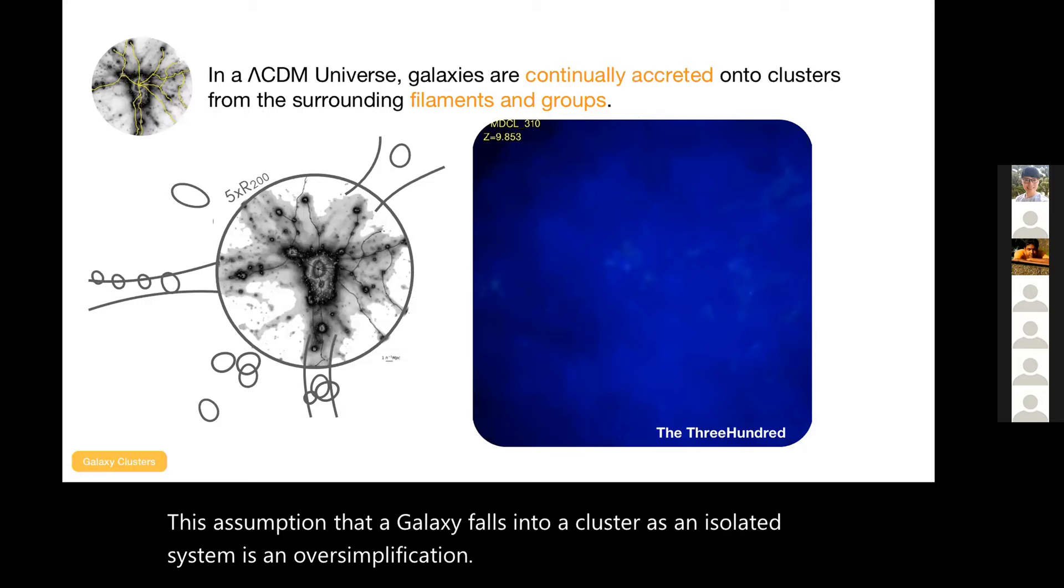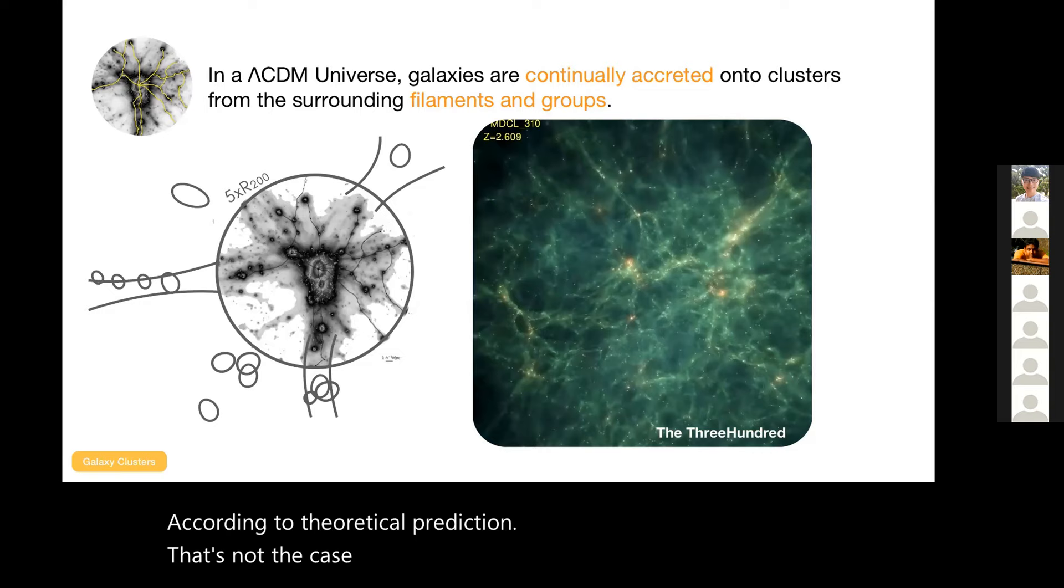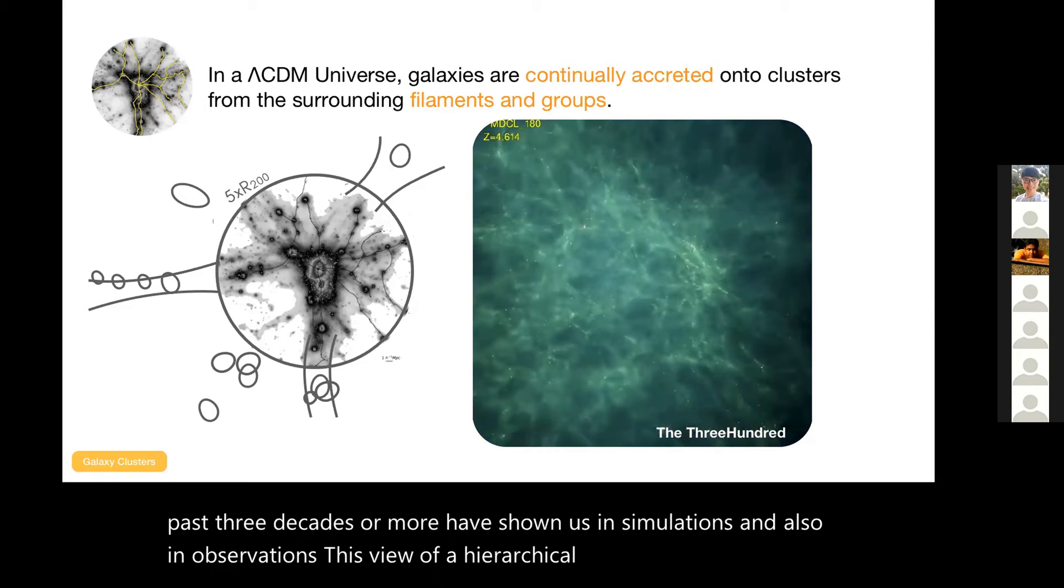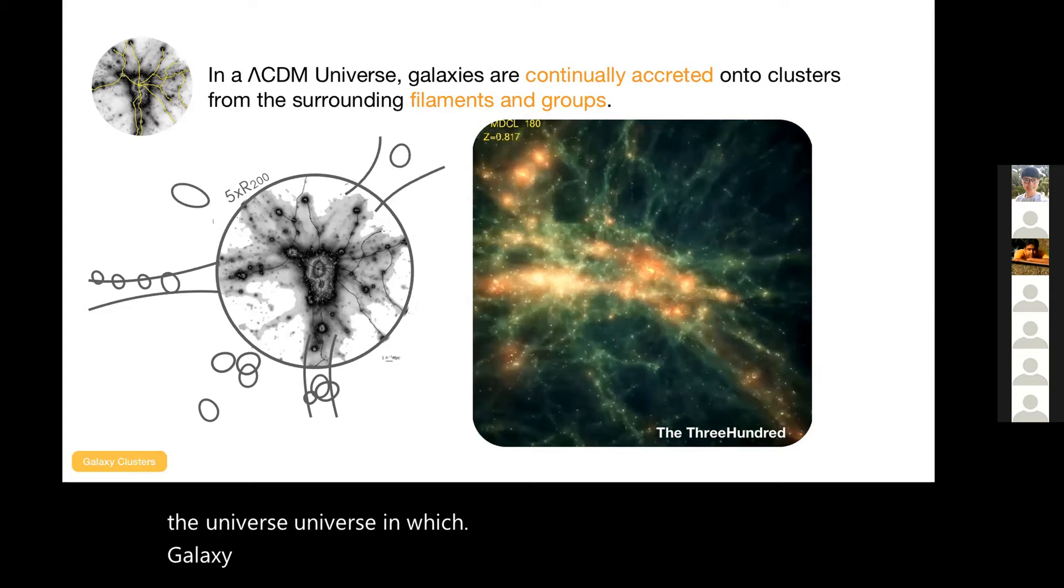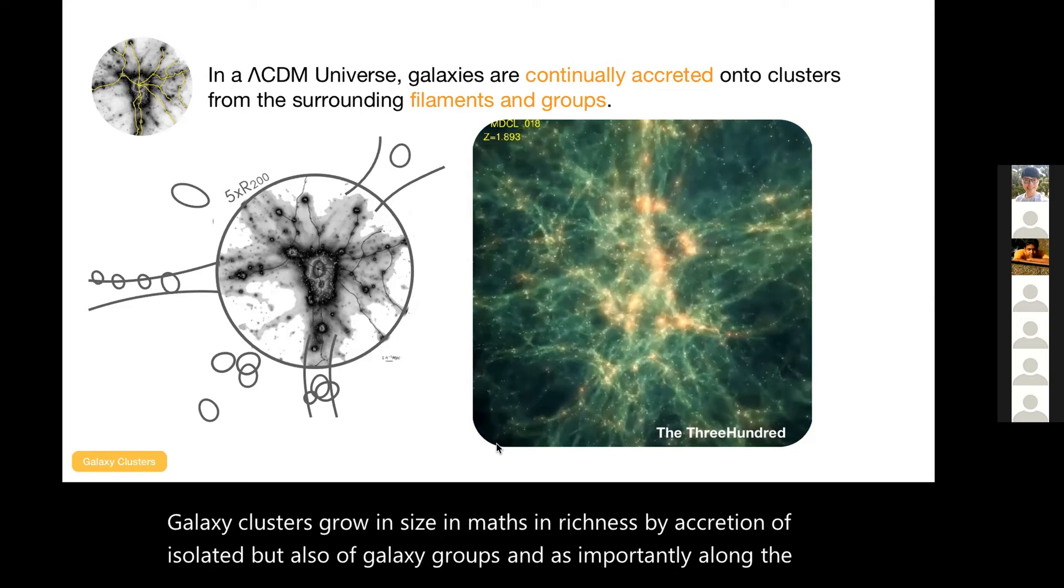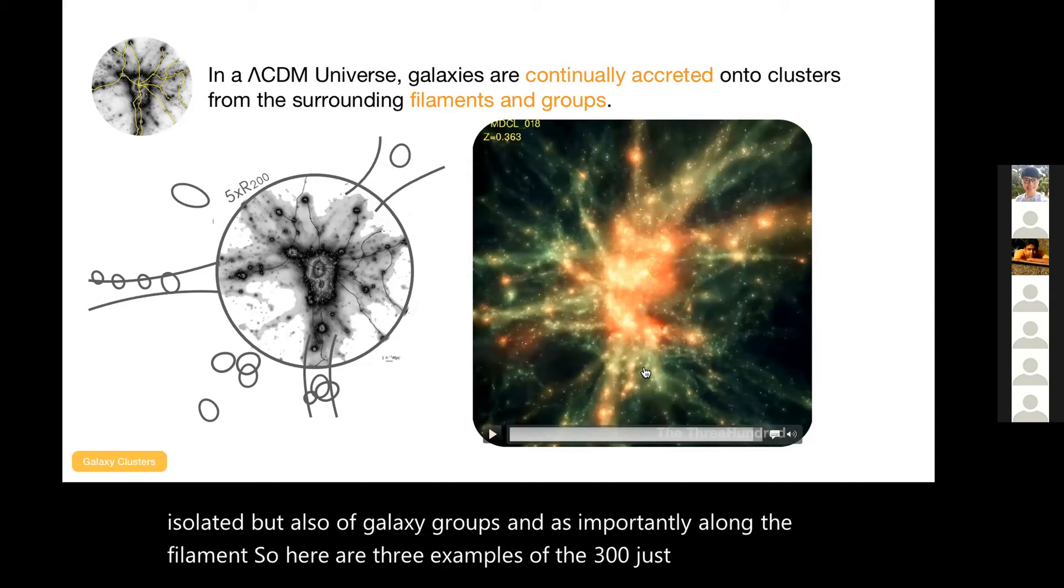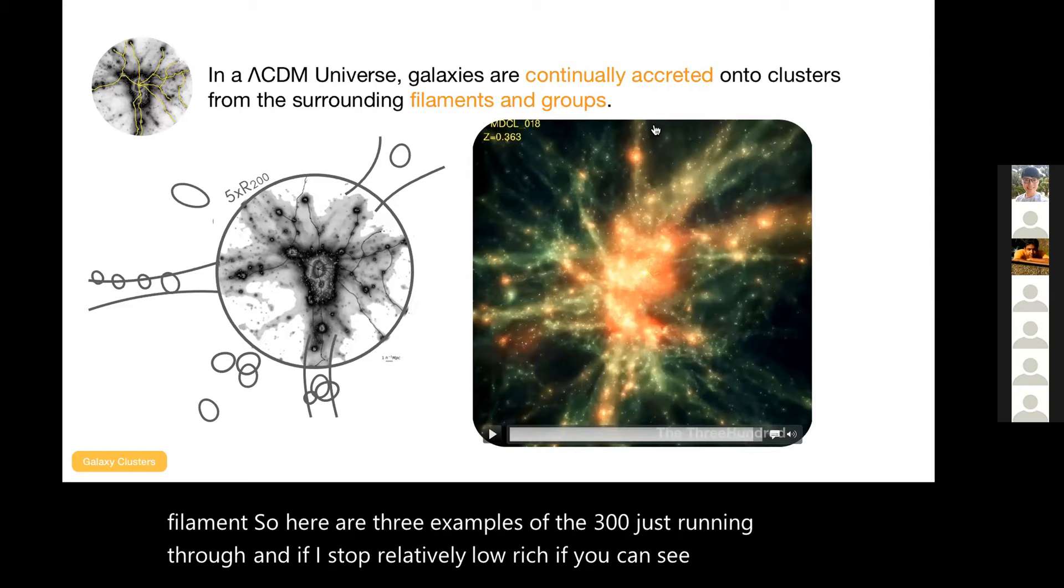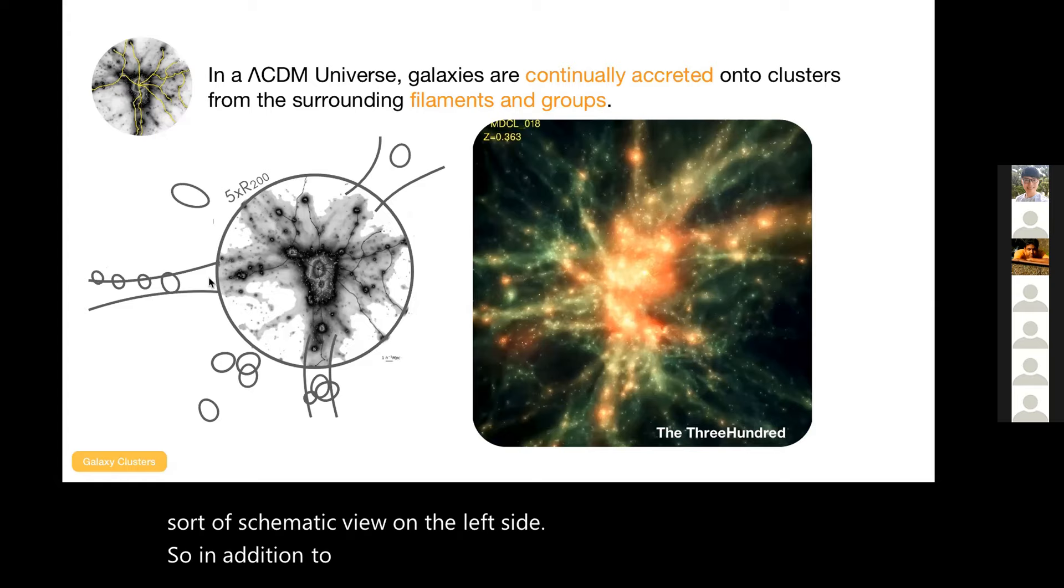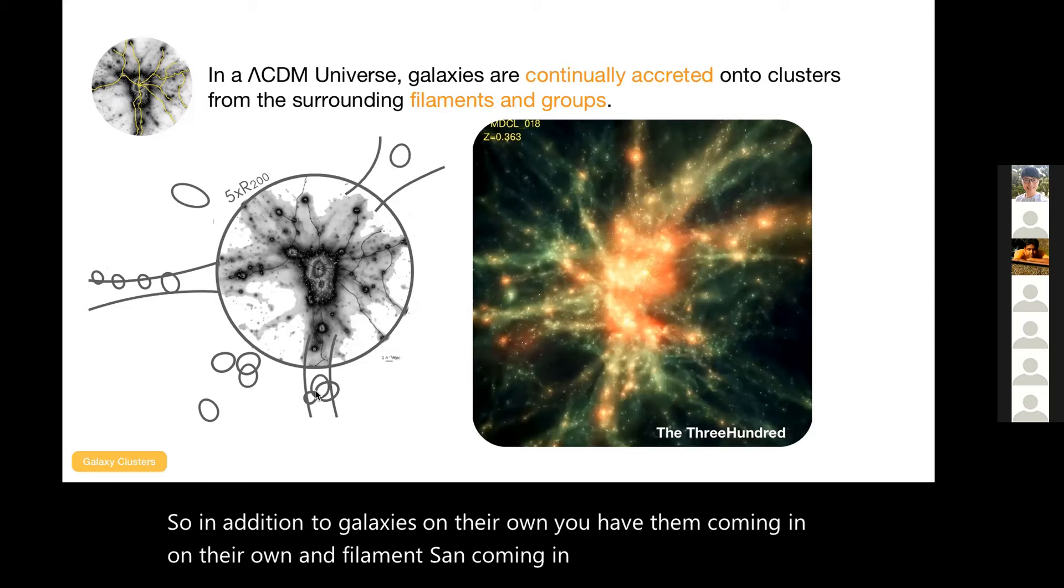According to theoretical prediction, that's not the case that they fall in on their own. Really, the past three decades or more have shown us in simulations and also in observations this view of hierarchical structure formation of the universe in which galaxy clusters grow in size, in mass, in richness by accretion of isolated galaxies but also of galaxy groups, and importantly along the filaments. So here are three examples of the 300 just running through. And if I stop at relatively low redshift, you can see these filaments coming in. You have the bigger halos coming in and that sort of schematic view on the left side. In addition to galaxies on their own, you have them coming in filaments and coming in as groups through filaments.